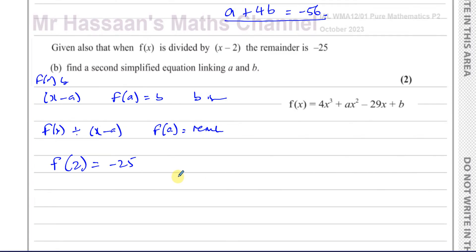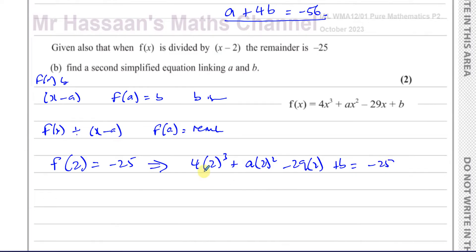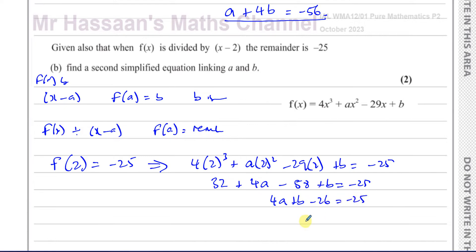Applying the remainder theorem with x = 2: 4(2³) + a(2²) - 29(2) + b = -25. That's 32 + 4a - 58 + b = -25. Simplifying: 4a + b - 26 = -25, so 4a + b = 1. So we now have two equations: a + 4b = -56 from part (a), and 4a + b = 1 from the remainder condition.